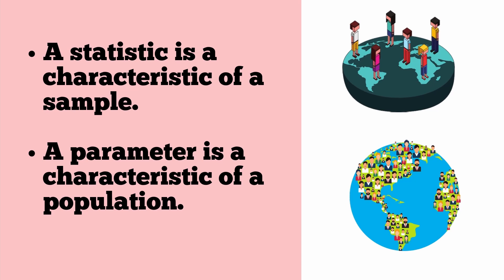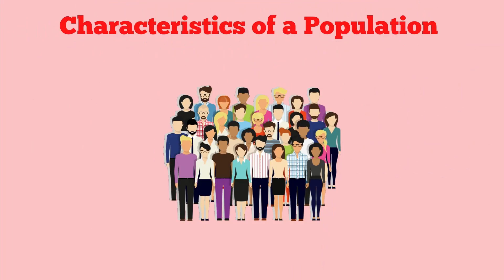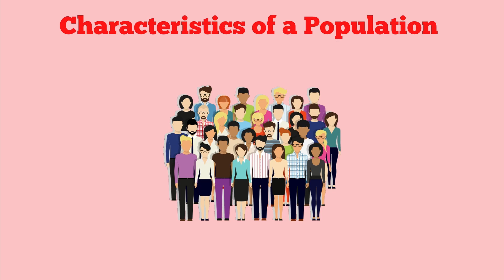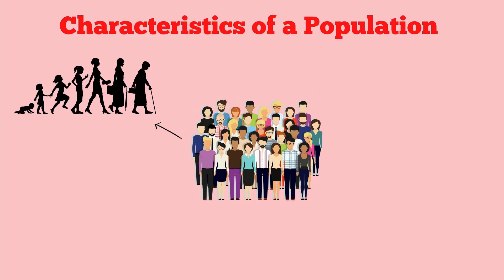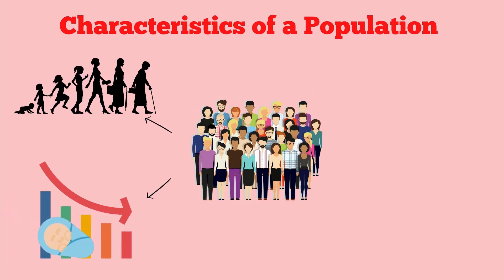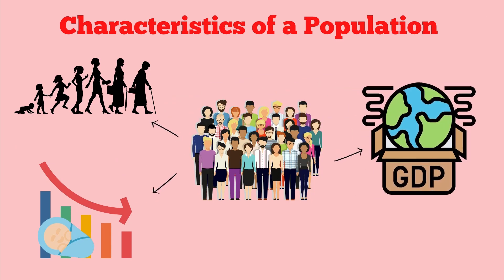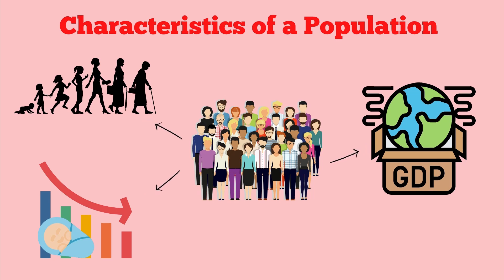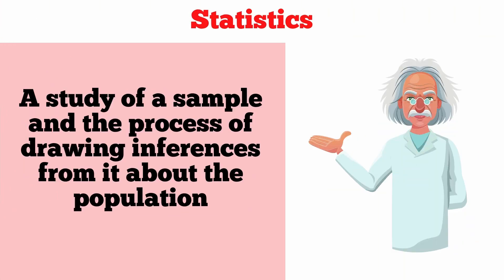Coming back to our original topic: a statistic is a characteristic of a sample, while a parameter is a characteristic of a population. A characteristic of a population or sample can be its demographics. For example, if our population is all the people living in a specific country, then their age structure, birth and death rates, and GDP are a few characteristics we may want to investigate. These characteristics change with the population type.